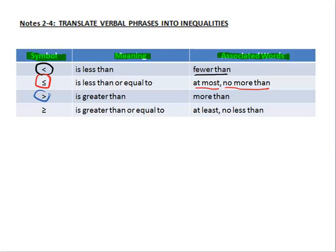The third one is greater than, and we typically associate the phrase more than with that one. And then also we have greater than or equal to, and that comes out as at least and no less than. If we see those phrases in a word problem, we're talking about greater than or equal to. There's more associated words than just these phrases, but these are the ones that I want you to be familiar with.